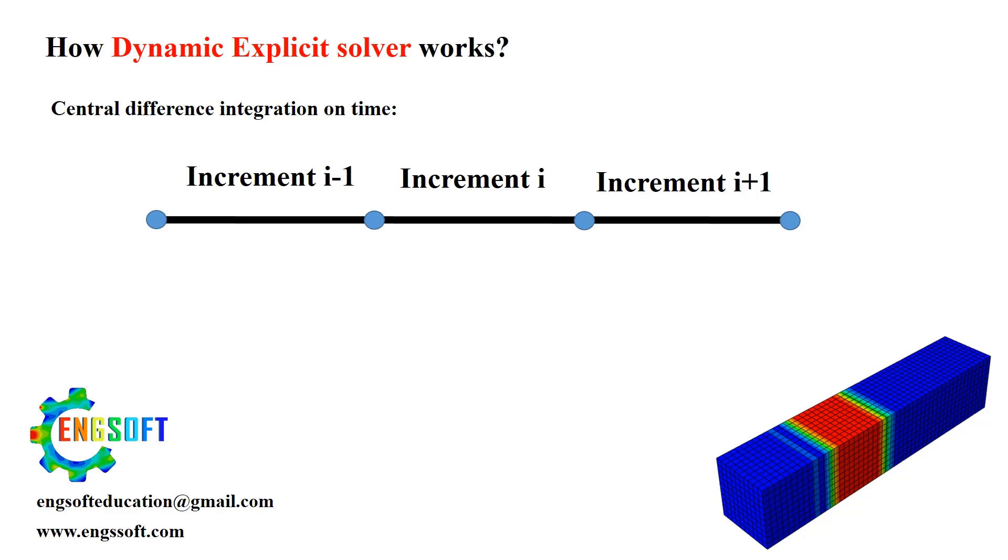Consider an increment i at time t. We calculate accelerations at time t based on the external and internal forces. Now, if we've already calculated the velocity at the midpoint of the previous increment, we can use the current acceleration to update the velocity at the midpoint of the current increment. This method improves accuracy by effectively using the midpoint velocity slope or acceleration between two points.